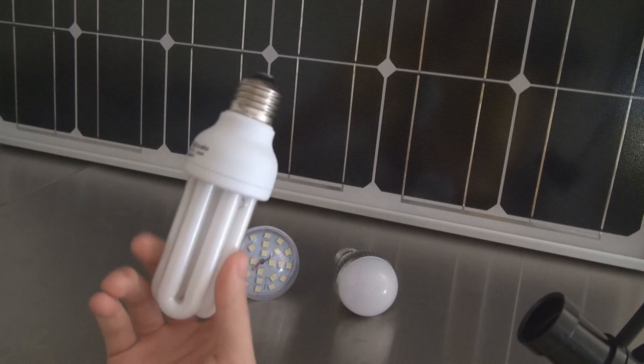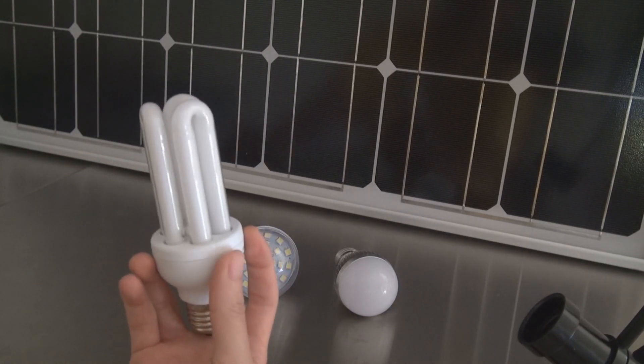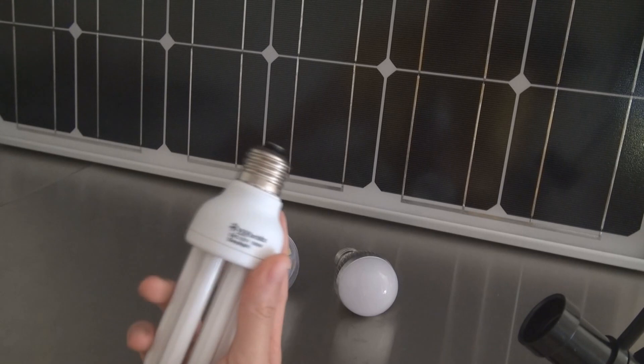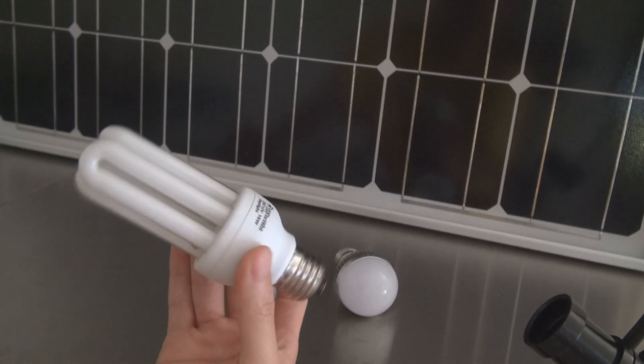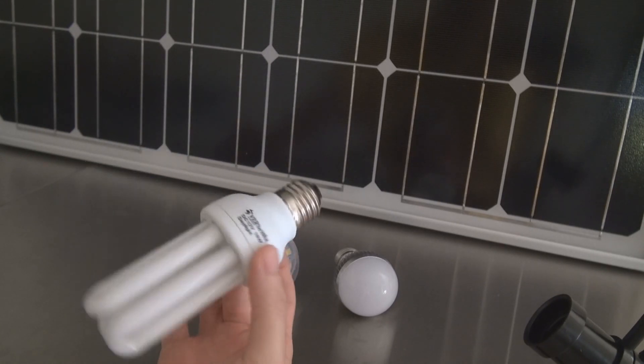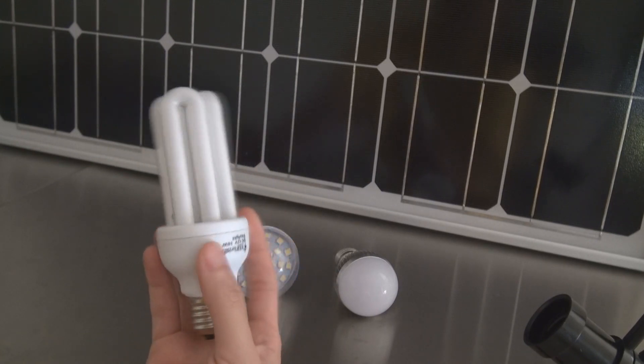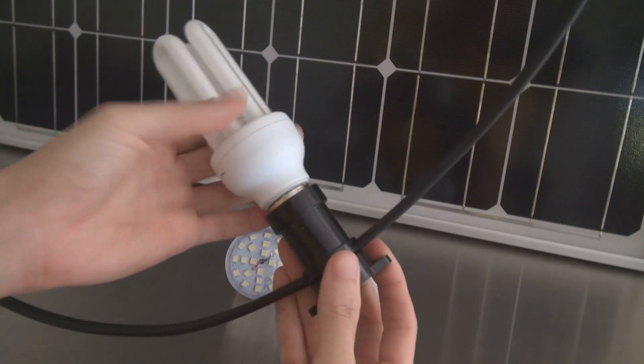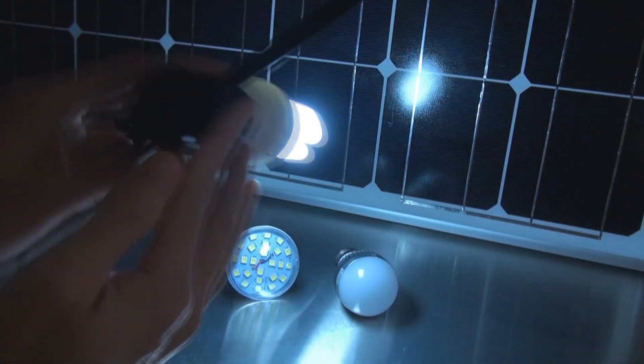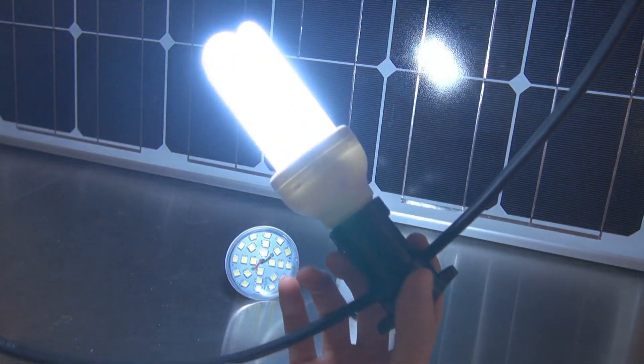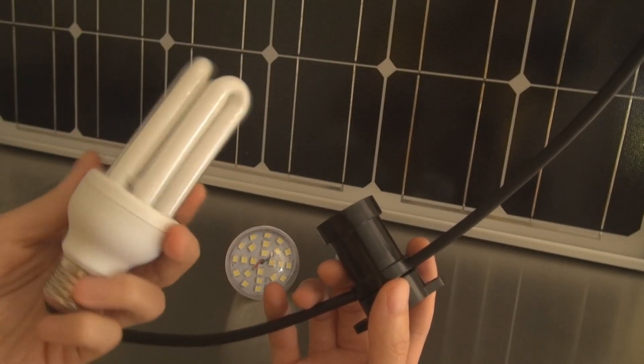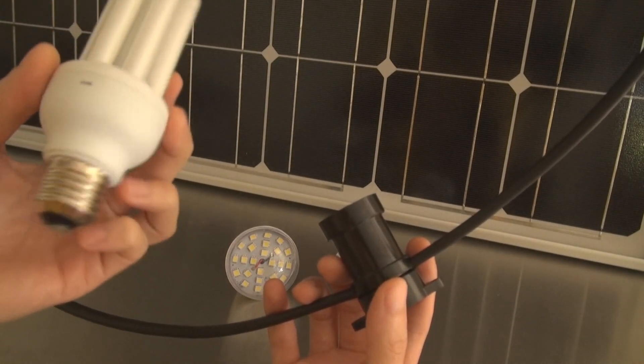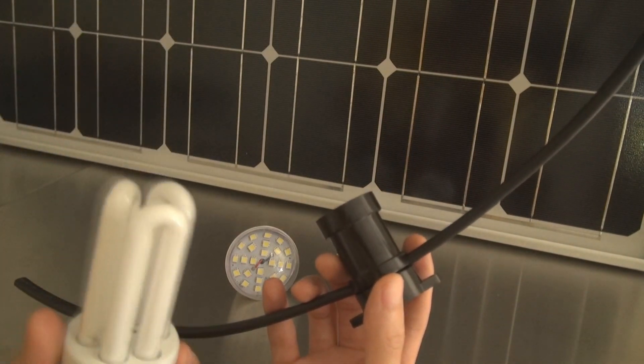As in the solar application, we have been using this E27 compact fluorescent light for a very long time and this one is always equipped with the DIY kit. This is 18 watt 12V and has been used to light up all the lighting applications. This is very affordable.